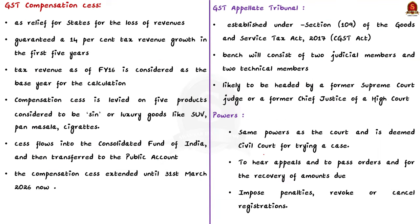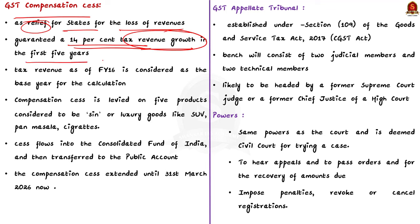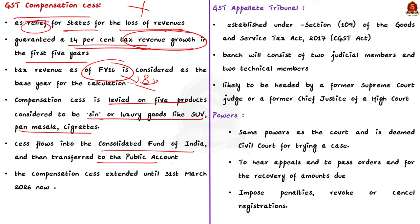GST Compensation Cess was introduced as relief for states for revenue loss arising from GST implementation. States were guaranteed 14% tax revenue growth in the first five years after GST, with financial year 2016 as the base year. Any shortfall is compensated by the centre using funds collected as compensation cess, which is levied on five sin or luxury goods like SUVs, pan masala, and cigarettes. The collected cess flows into the Consolidated Fund of India and then to a GST Compensation Cess Account under the Public Accounts. States are compensated bimonthly. The government recently extended the compensation cess until 31st March 2026.